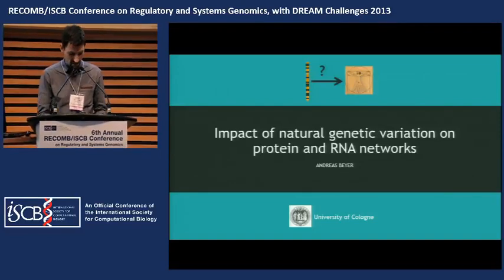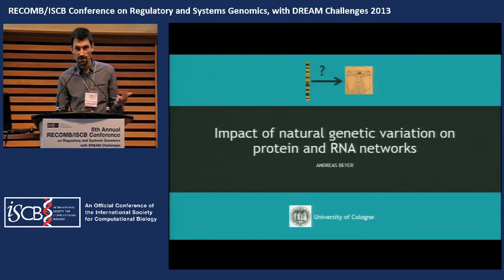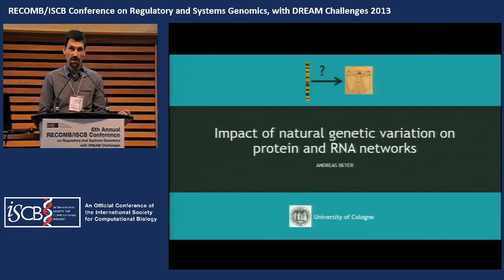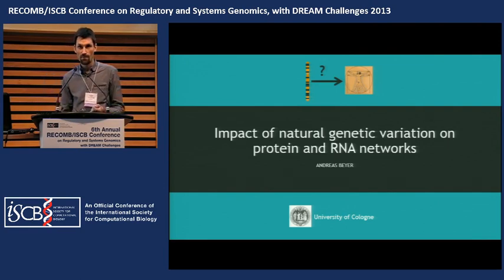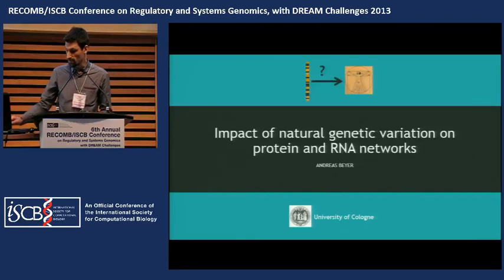We have proteins and RNAs as traits and the impact of genetic variation. I want to show you three things: first, very briefly, how do we do QTL mapping? And then an application to protein QTLs, and a second application to an RNA QTL study where we're using RNA sequencing. The study has much higher statistical power than the other studies you've seen so far, which is also quite interesting.